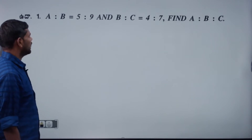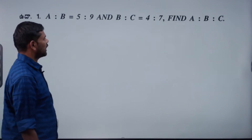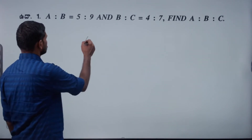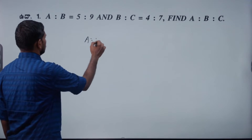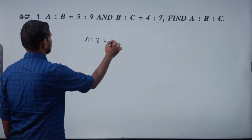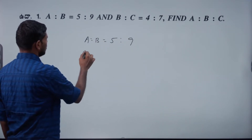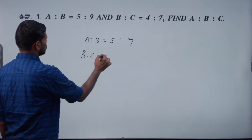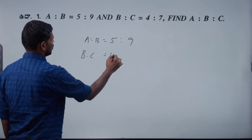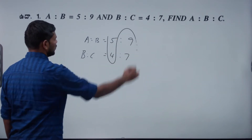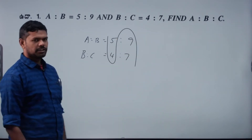A is to B equals 5 is to 9. B is to C equals 4 is to 7. Then find A is to B is to C.